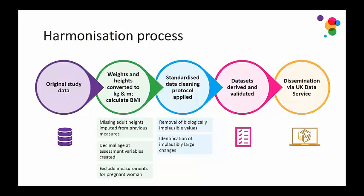It might seem straightforward to compare heights and weights across these studies, but even with these apparently simple measures, considerable work was required to make them as comparable as possible — both within studies at different ages and across studies. For example, in the older cohorts, height and weight were measured in imperial units, so these were all converted to metric. A standardised cleaning protocol was applied across all studies to remove biologically implausible values.